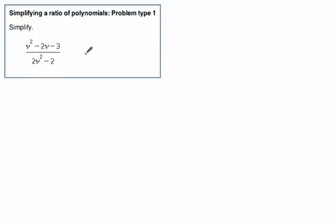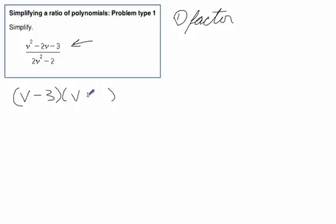Let's take a look at one more example. First step, factor. So, can we factor this one? Looks like we can. V and v, and it's going to be minus 3 and a plus 1.